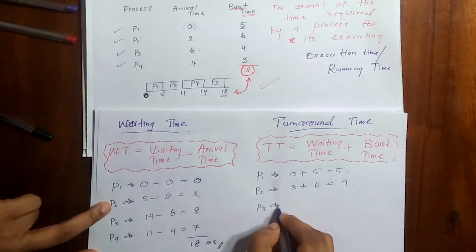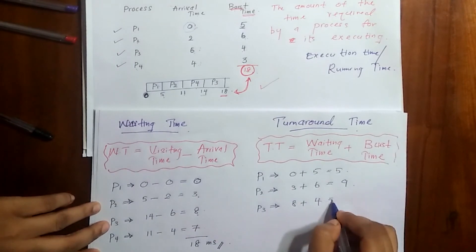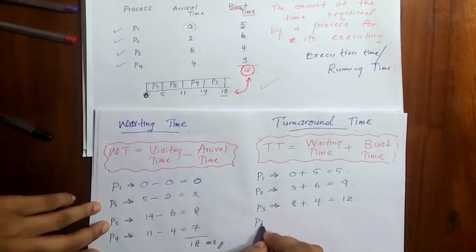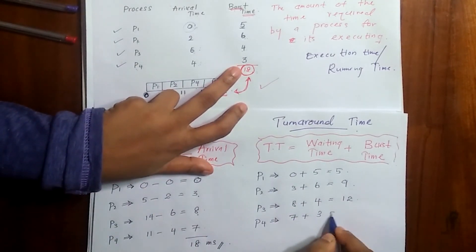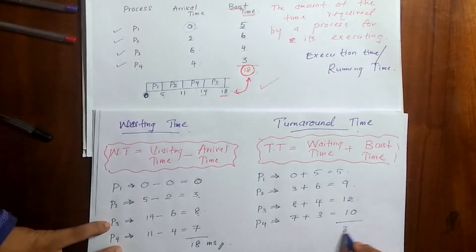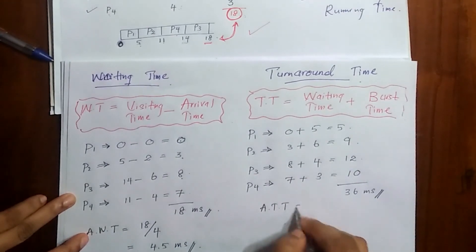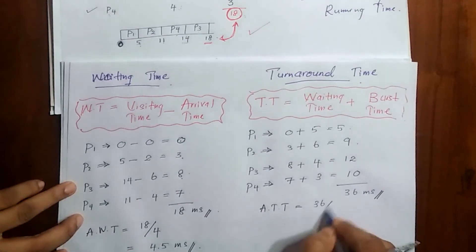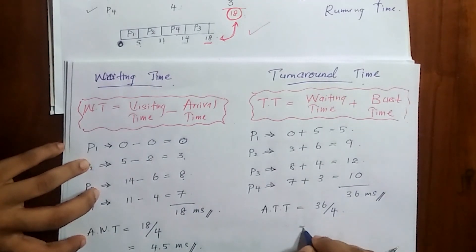For P3, waiting time 8 plus burst time 4 equals 12. For P4, waiting time 7 plus burst time 3 equals 10. The total turnaround time is 5 plus 9 plus 12 plus 10, which is 36 milliseconds. To get the average turnaround time, we divide 36 by 4, giving 9 milliseconds.